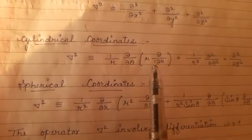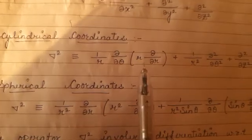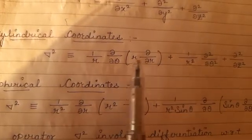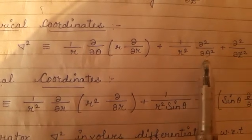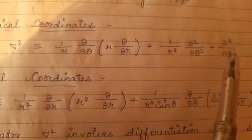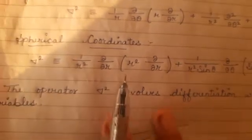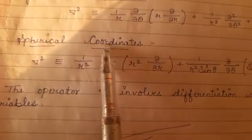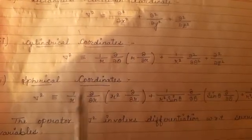In the case of cylindrical coordinates, the Laplacian operator will be: 1 over r, curly by curly r of r into the partial derivative curly by curly r, plus 1 over r square, del square divided by del theta square.